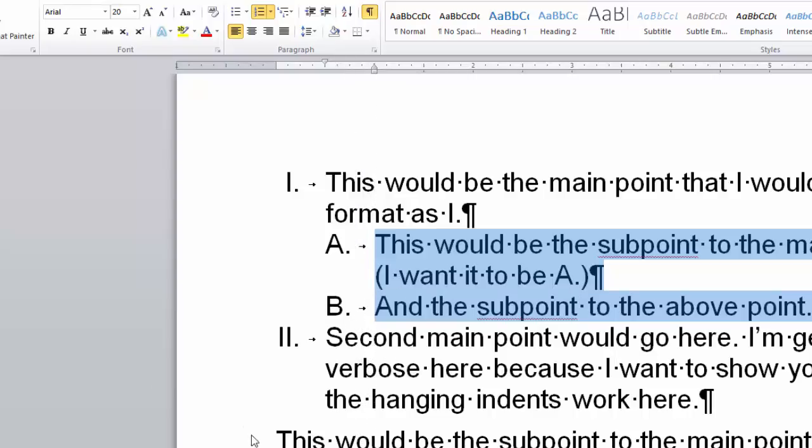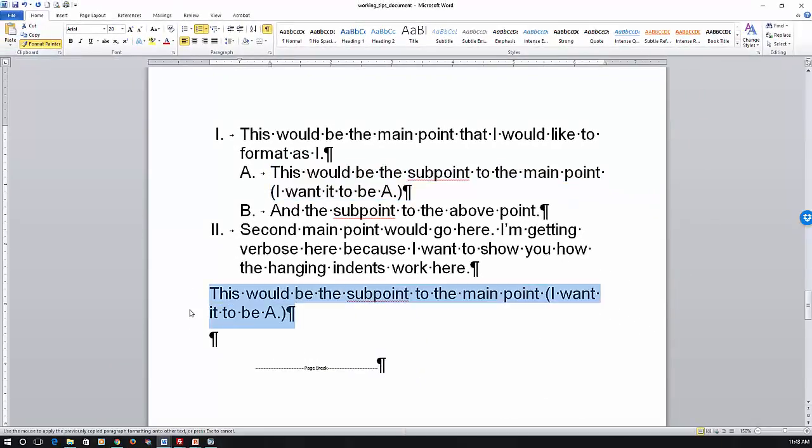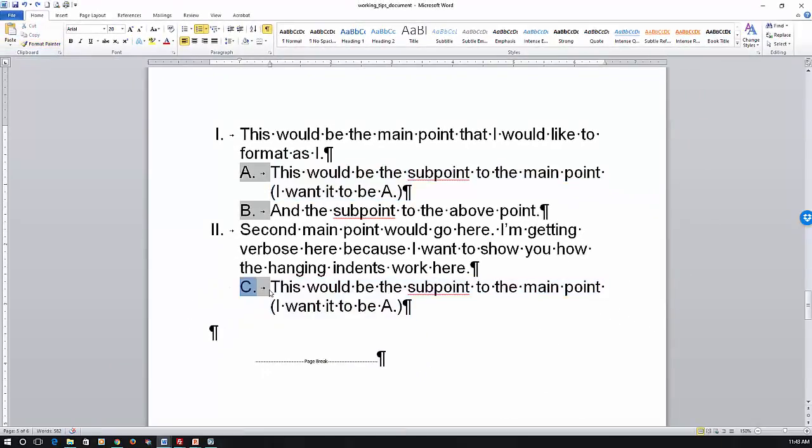So this would be a subpoint to the main point above. So if I want to click on this, I have to click the whole thing, because if I don't get this little paragraph marker in here, it won't identify the formatting. That's what holds the formatting for this piece. So again, I'm going to go to Format Painter and then I'm going to highlight that. Now notice that it continued numbering at C, and we would like this to start at A.